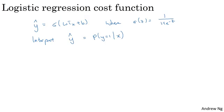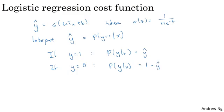So another way to say this is that if y is equal to one, then the chance of y given x is equal to y hat. And conversely, if y is equal to zero, then the chance that y was zero was one minus y hat. So if y hat was the chance that y is equal to one, then one minus y hat is the chance that y is equal to zero.